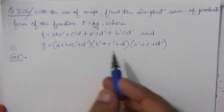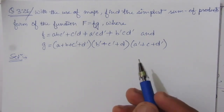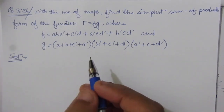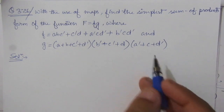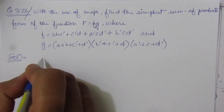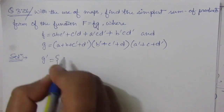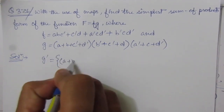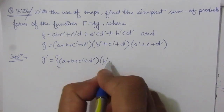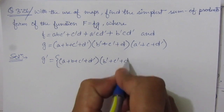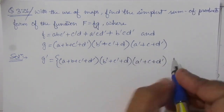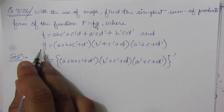The function g is given in product of sum expression. To use this expression in a four-variable map, we first have to convert g into a sum of product form. So if we find g-bar, we write: (a + b + c-bar + d-bar) · (b-bar + c-bar + d) · (a-bar + c + d-bar).